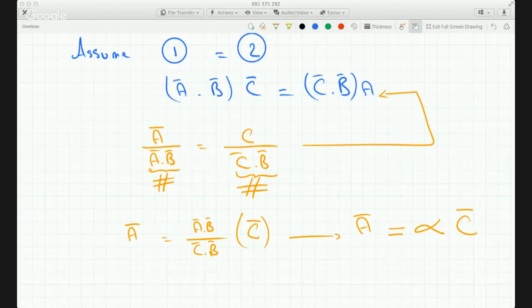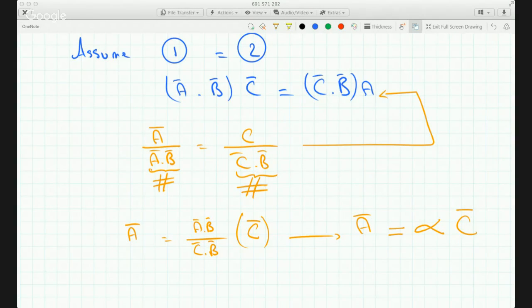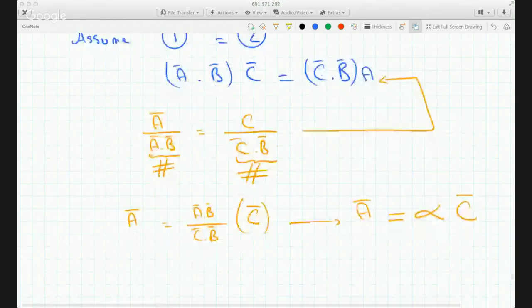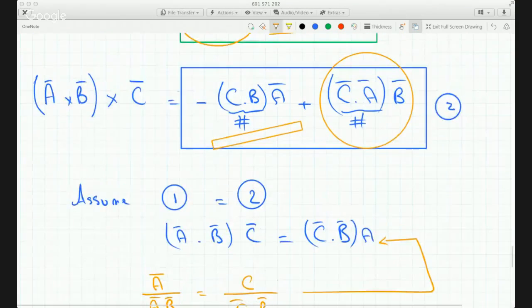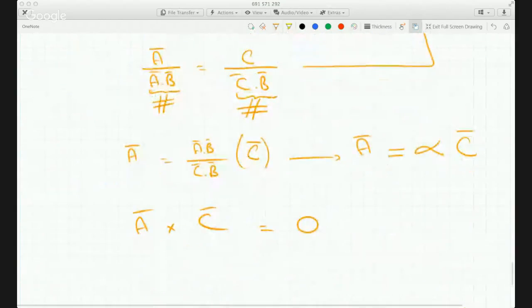Because if they're on top of each other, then A cross C will be zero. So, A being a scalar multiple of vector C proves that the assumption we made is not a valid assumption, and therefore they're not necessarily equal.